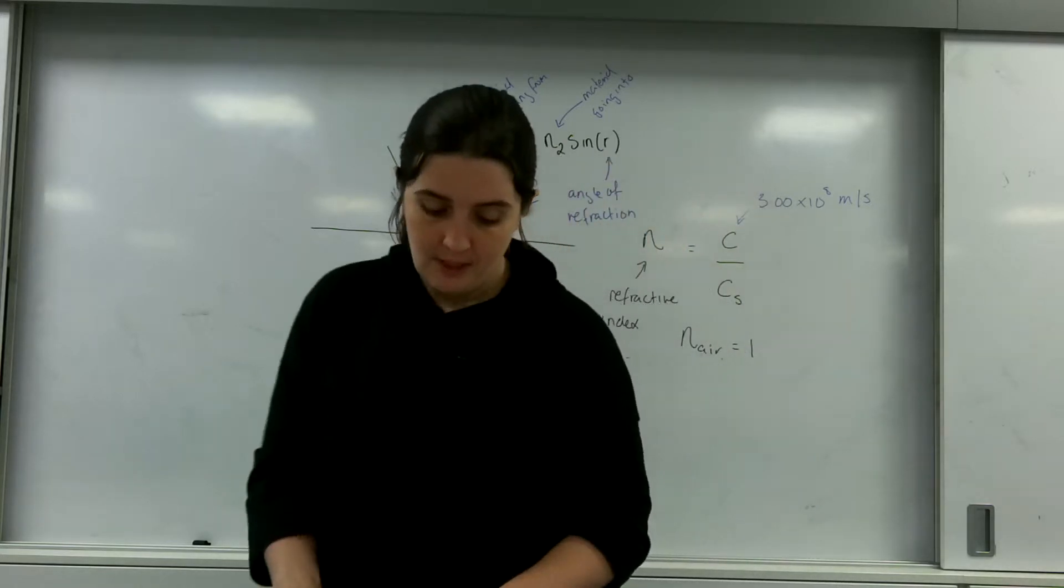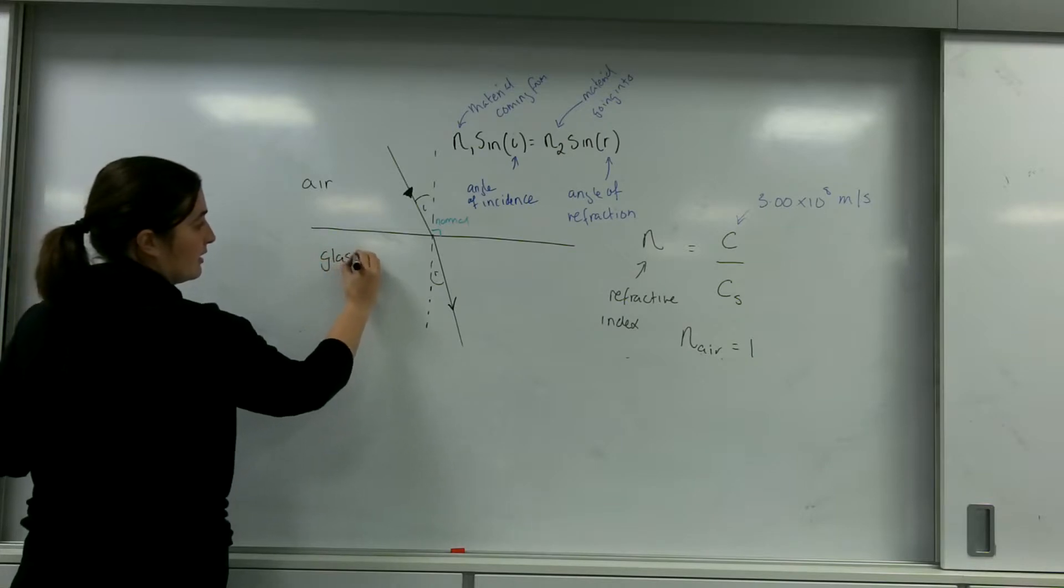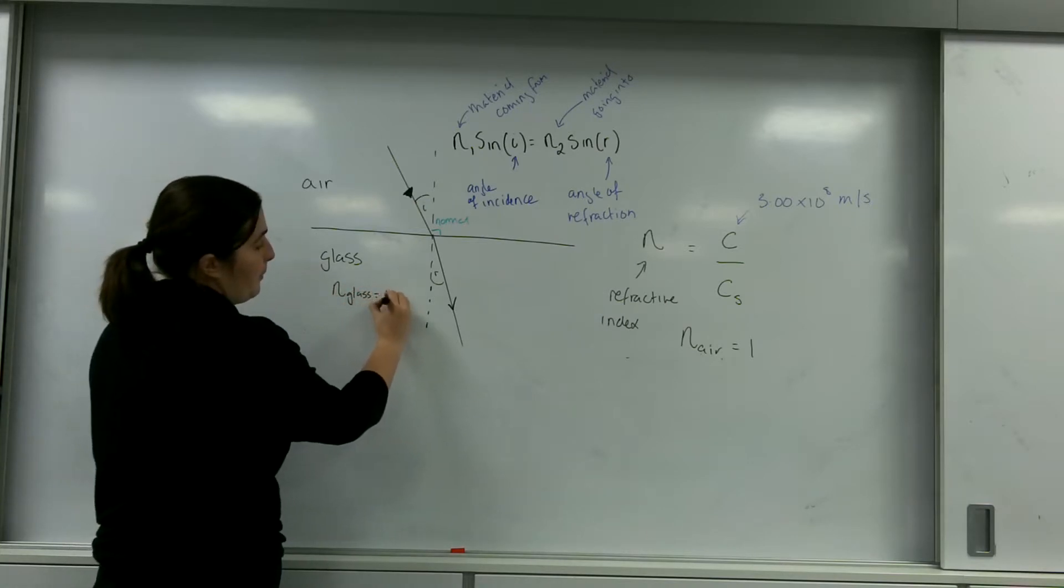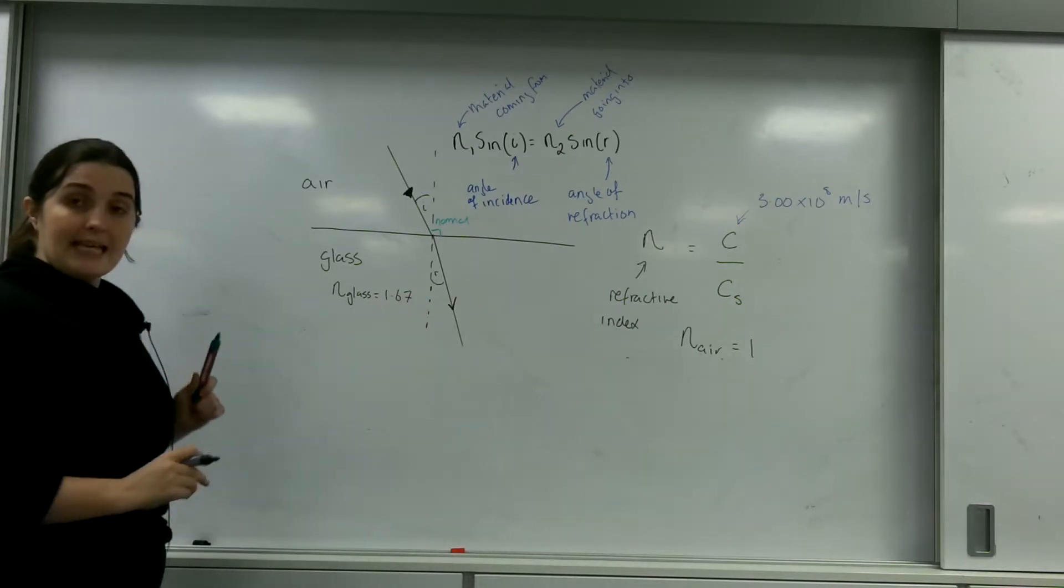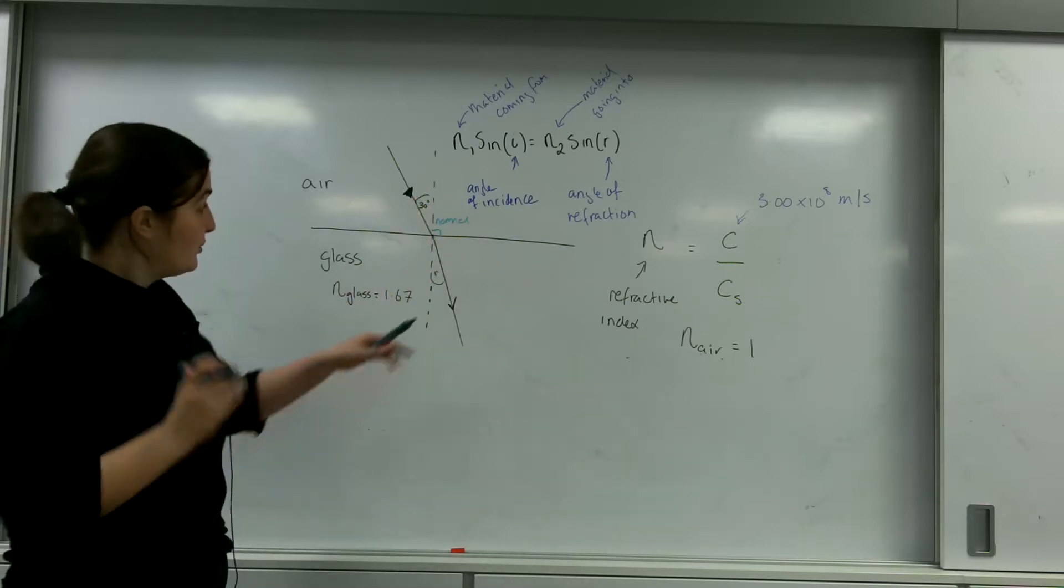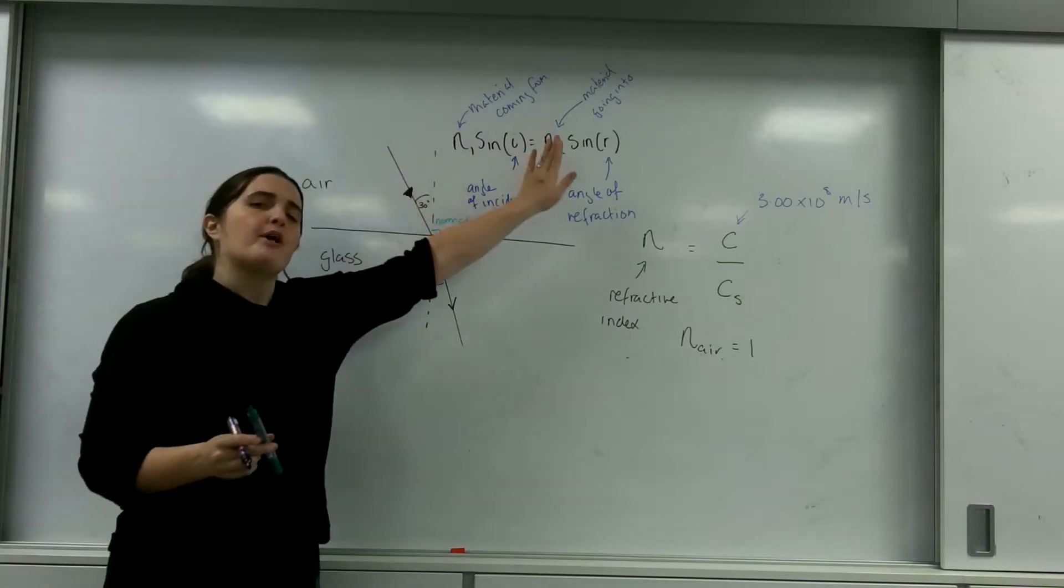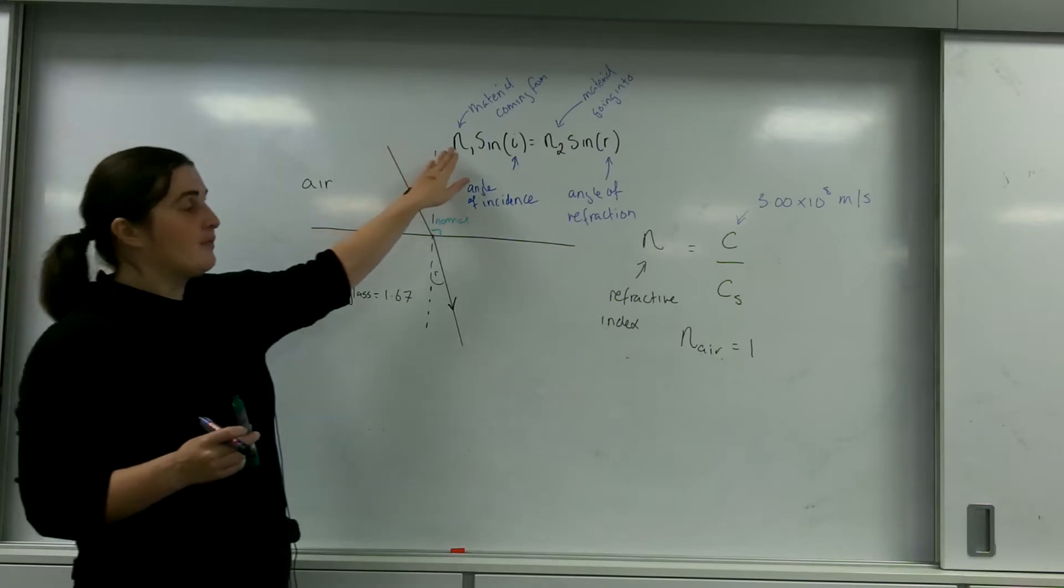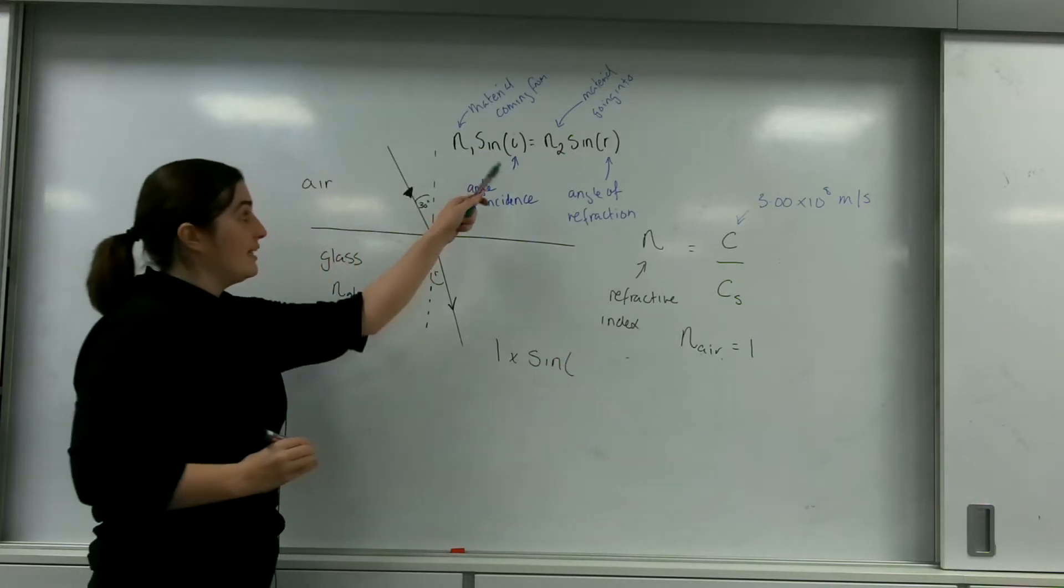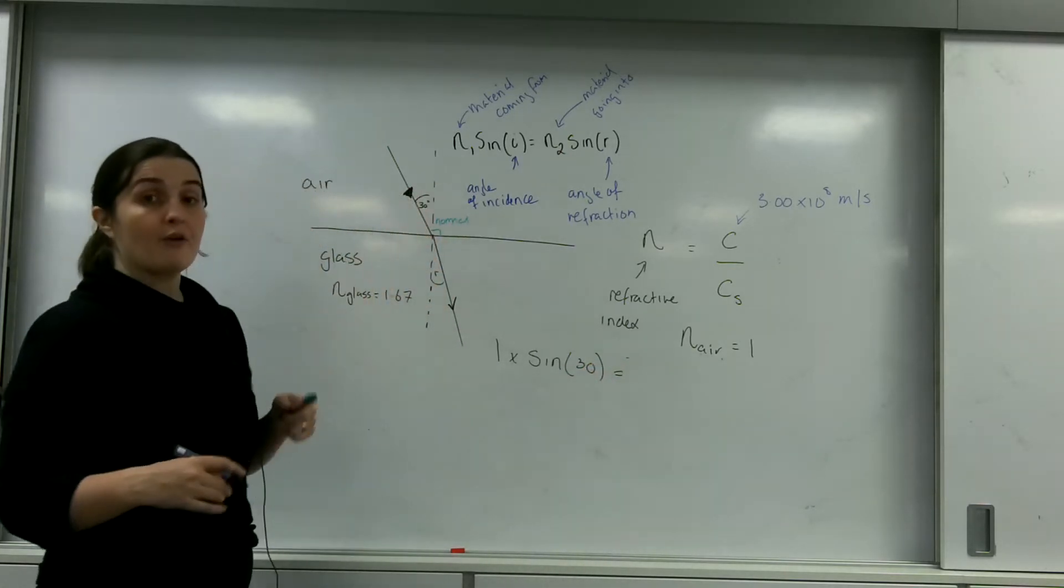So let's do an example question. Let's say an object is coming from air to glass. Let's say the refractive index of glass is 1.67. Let's say the angle I'm coming in at is 30 degrees. Let's find my angle of refraction. So I look at this formula and I'm going where am I coming from and where am I going to. So I'm coming from air and the refractive index of air is 1. My angle of incidence is 30 degrees.